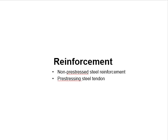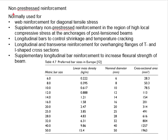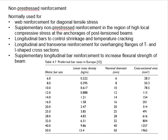There are two main types of steel reinforcement used in pre-stressed concrete structures: non-pre-stress steel reinforcement and pre-stressing steel tendons. The non-pre-stress reinforcement bar appears in two main forms: the high yield steel bar and the mild steel bar.